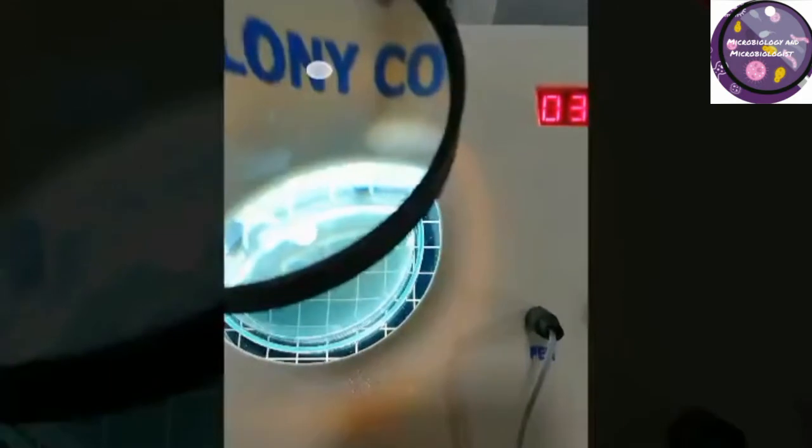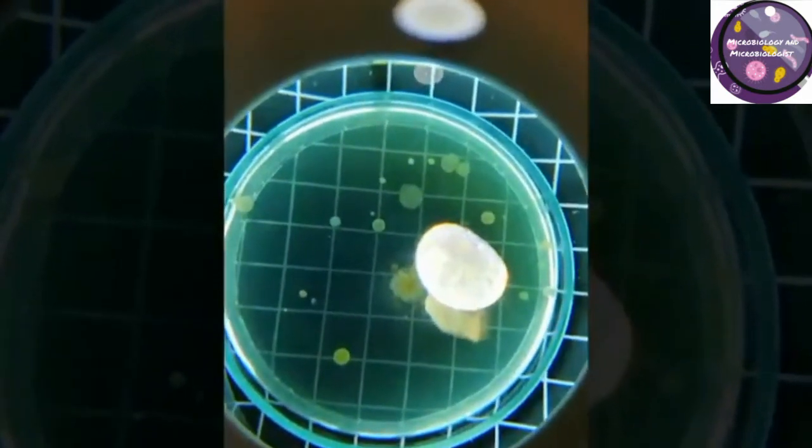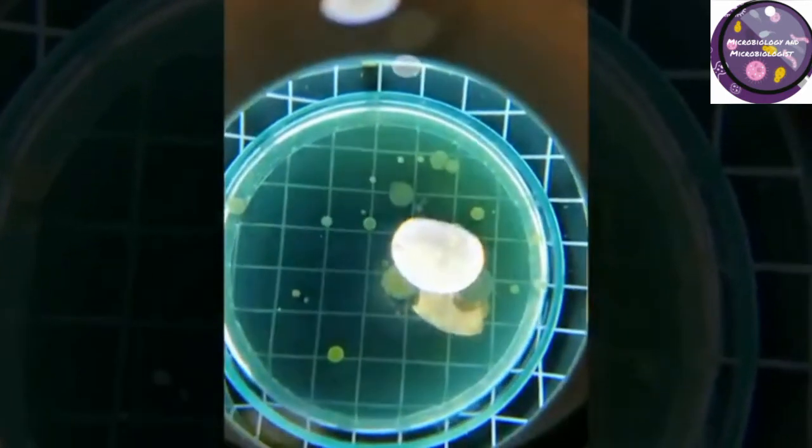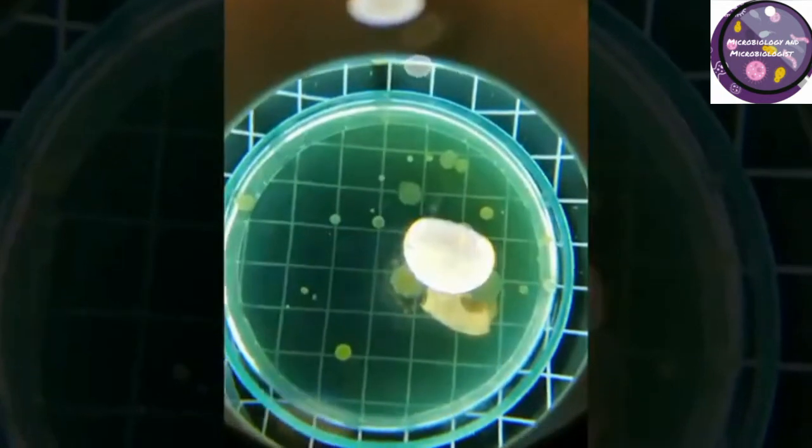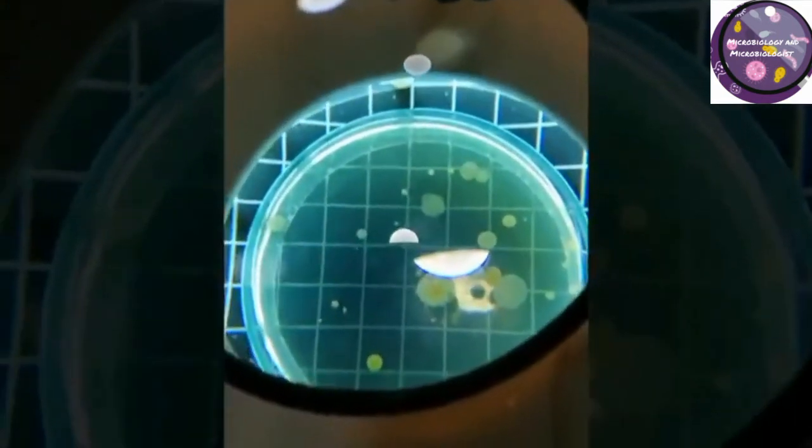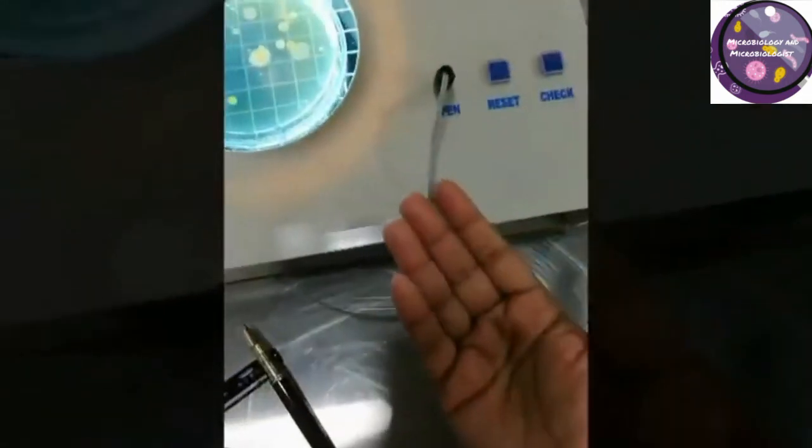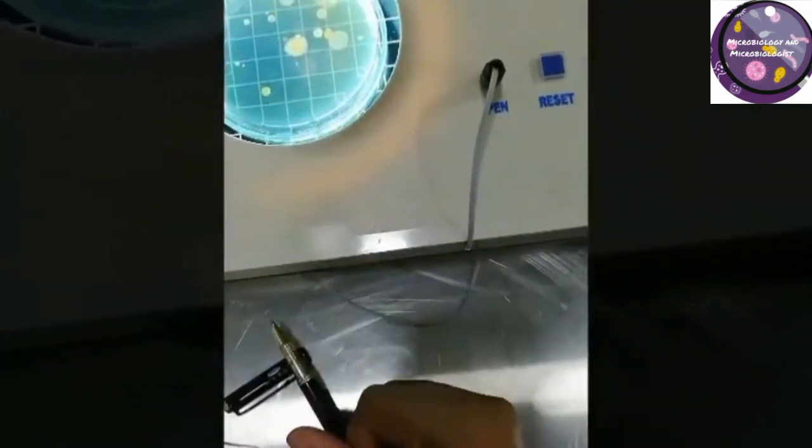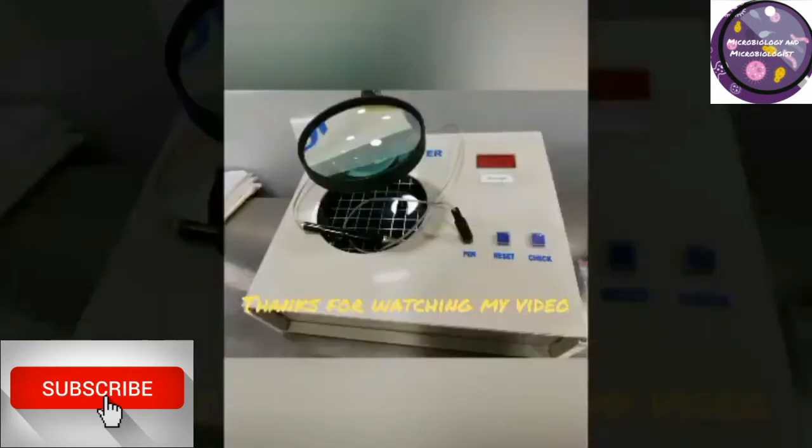This is how I count it, and this is really good, but it is somehow time-consuming. I prefer manual counting. I don't prefer counting by the colony counter because it's taking time. If you can see the colonies properly, you don't need to count with this colony counter, but it's good as well. Please give a thumbs up to my video.